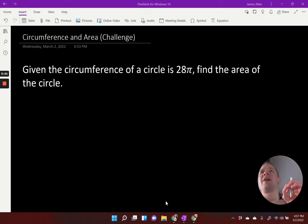All right, we got some not-so-straightforward circumference and area type problems. Here we got, given the circumference of a circle is 28π, find the area of the circle.